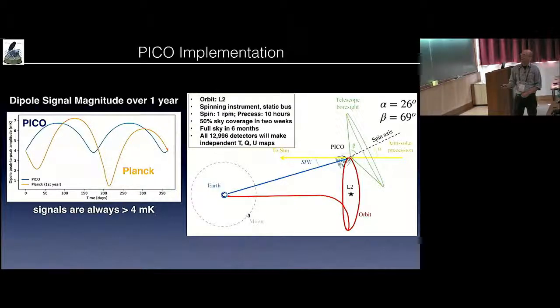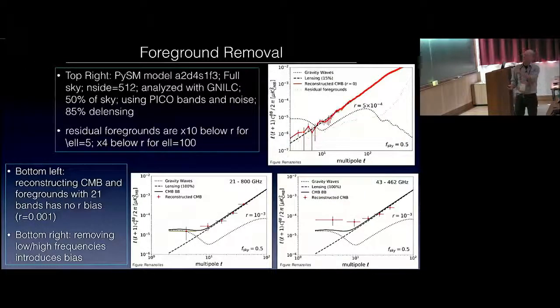Fifty percent of the sky in about two weeks. Full sky in six months. Ten year missions. So you have ten independent maps. And all the 13,000 detectors will make independent T, Q and U maps. This shows the dipole signal, all the time larger than about 4 millikelvin, giving a large calibration at all times. The red curve is Planck.